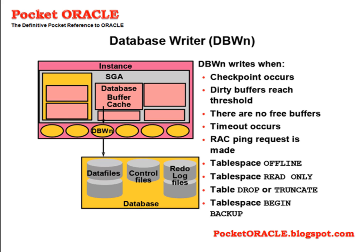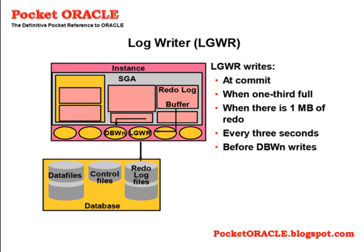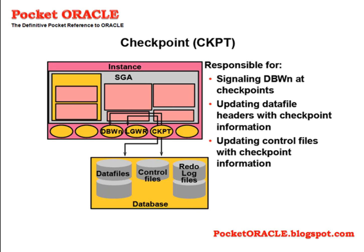The DBWN process — or processes — is responsible for all writing to data files. It writes when a checkpoint occurs, dirty buffers reach a threshold, there are no free buffers, or during tablespace operations and backup operations. The LGWR propagates all changes applied to data in the database buffer cache to the online redo log files on disk. In contrast with DBWN, this disk write activity is done as near as possible in real time — at commit, when one-third full, when there is one megabyte of redo, every three seconds, and before DBWN writes.